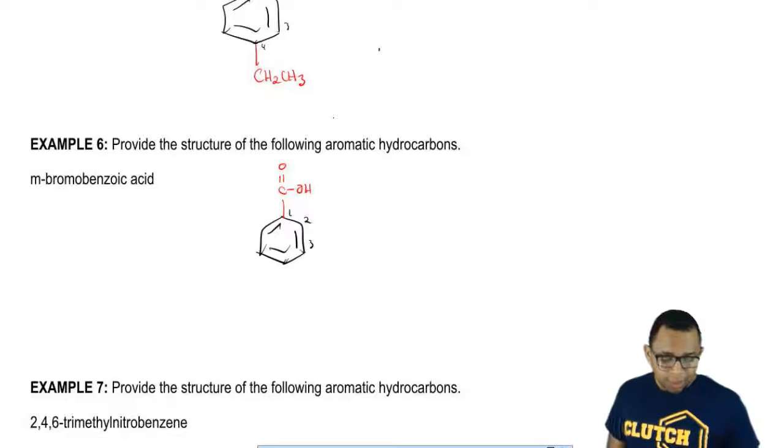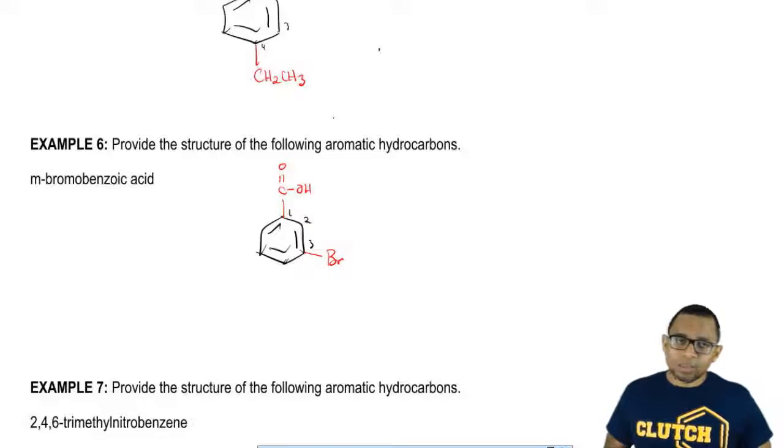There it goes there. Then 1,3 means that bromo, Br, is right there on carbon 3. Remember, carboxylic acid, highest in priority, where it's attached is carbon 1. This would be our structure.